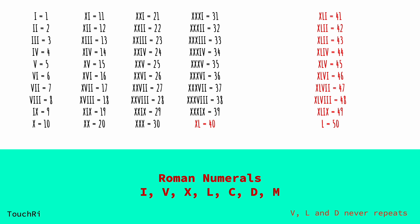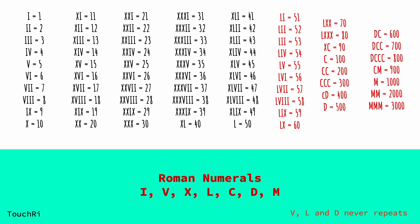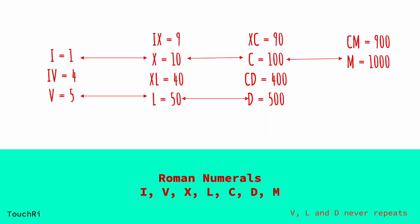Each of these letters corresponds to a specific value. For example, I represents 1, V represents 5, and X represents 10. Simple, right?